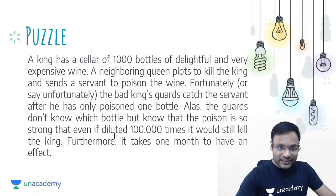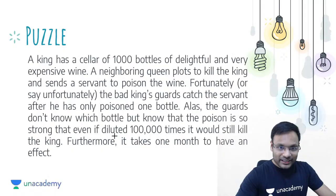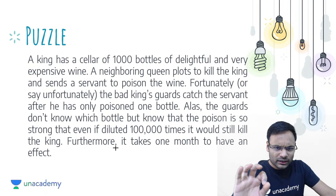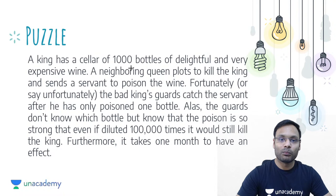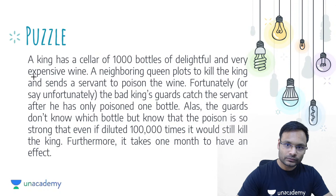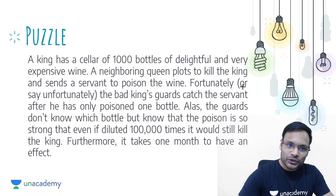What is the question? The question is a little bit longer, so first let's try to read it and after that we will try to solve it. A king has a cellar of 1000 bottles of delightful and very expensive wine. The neighbouring queen plots to kill the king and sends a servant to poison the wines. Unfortunately, the king's guards catch the servant after he has only poisoned one bottle.